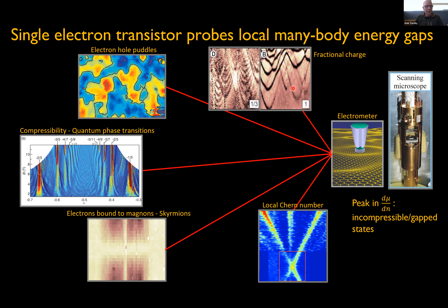This technique has carried us quite far in studying two-dimensional gapped systems. We have directly measured fractional charge in the fractional quantum Hall regime, observed the coexistence of electron and hole puddles in graphene, followed spin phase transitions within fractional quantum Hall states, and recently observed the binding of electron charge to spin waves to form skyrmions.